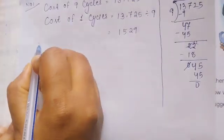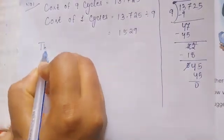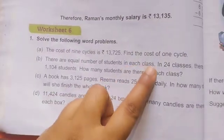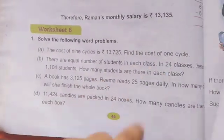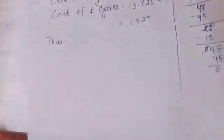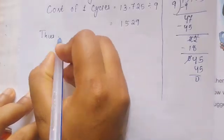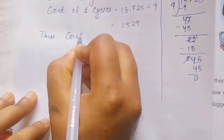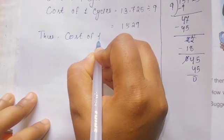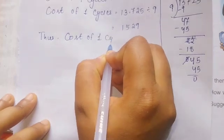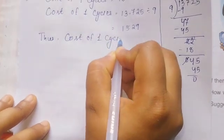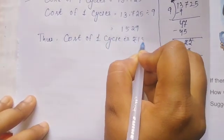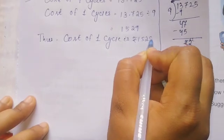Thus, the cost of 1 cycle is 1,529 rupees.